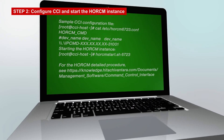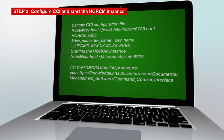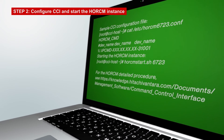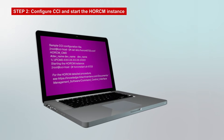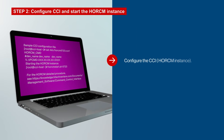The second step is configuring CCI and starting the HRCM instance. You configure CCI by creating an HRCM configuration file. This is a sample HRCM file where the HRCM instance is HRCM 6723. After you create the HRCM configuration file, you start the HRCM instance from the command line.